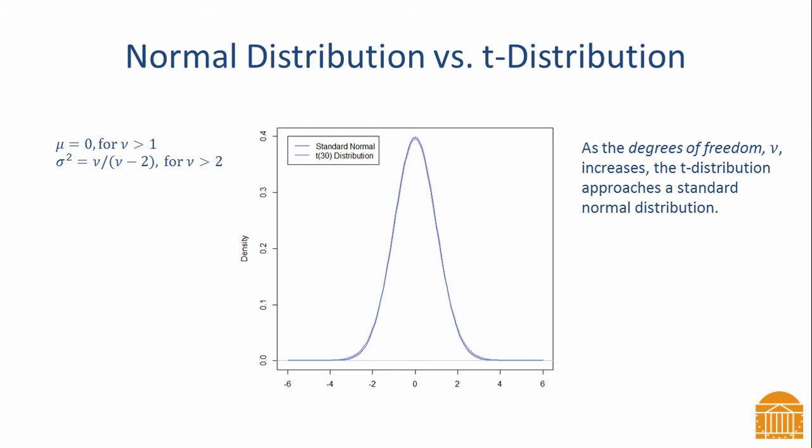The last figure shows that a t-distribution with 30 degrees of freedom is very similar to a standard normal distribution, but they are still not exactly the same. Both distributions have a mean of 0, but the t-distribution has slightly more variance.